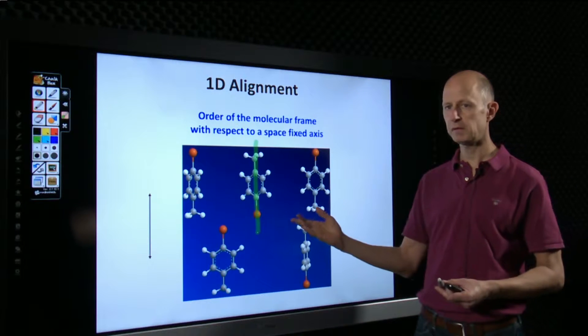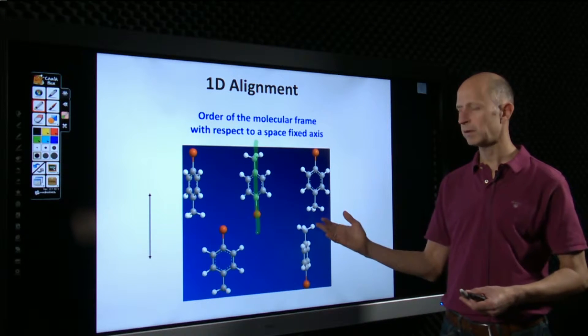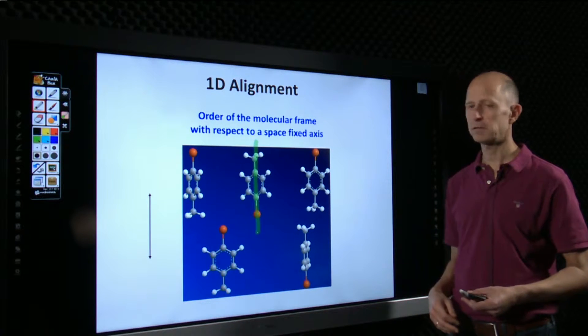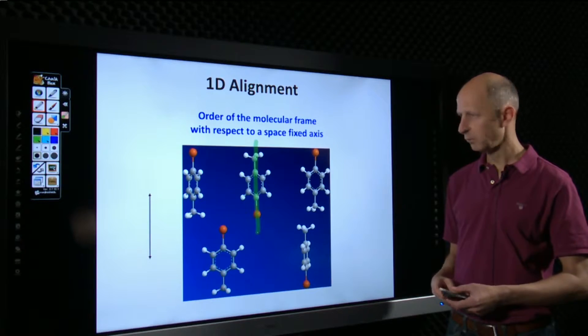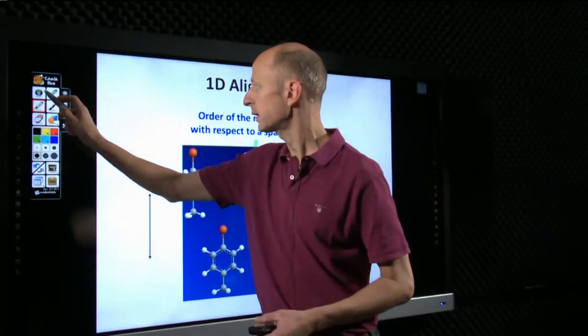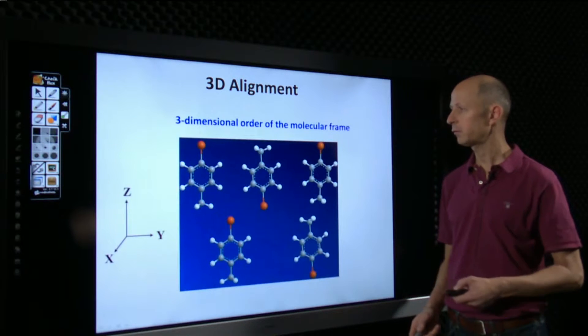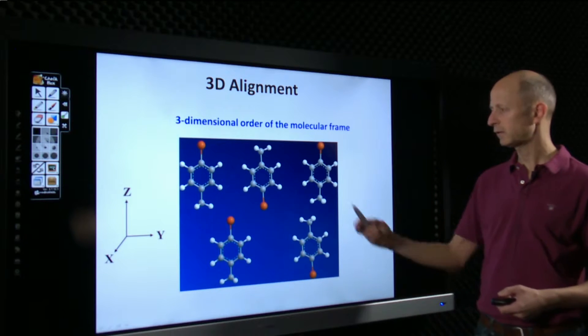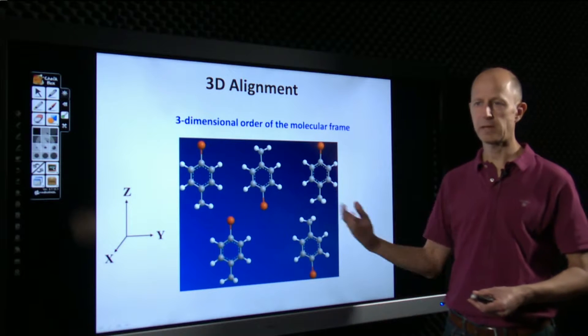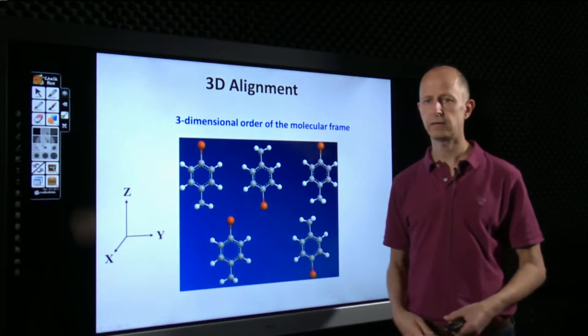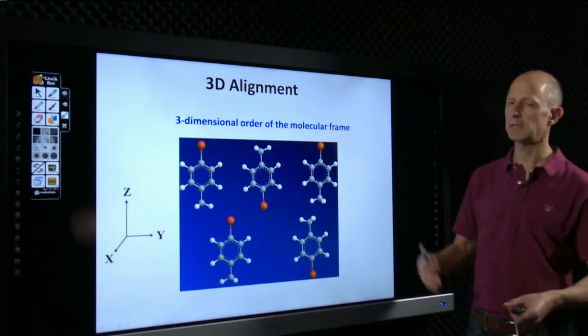However, as you can see, for this kind of asymmetric top molecule, one-dimensional alignment is not quite sufficient to fully obtain rotation control over the molecule. So, what one would ideally like to do is extend the concept of 1D alignment to 3D alignment. In this case, all three principal axes of the molecule is confined to three orthogonal axes that are fixed in space. So, this is 3D alignment.